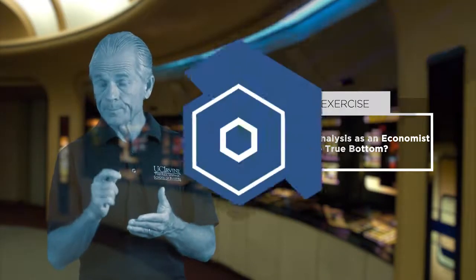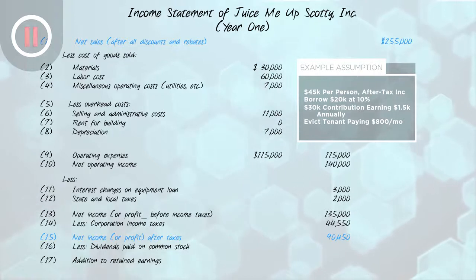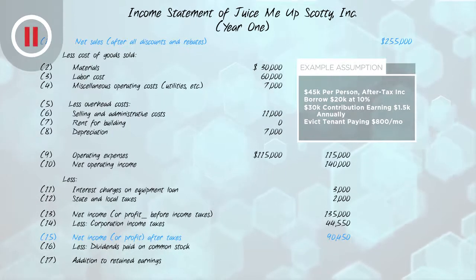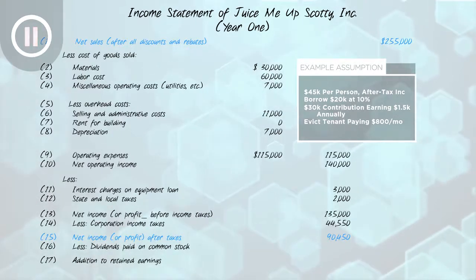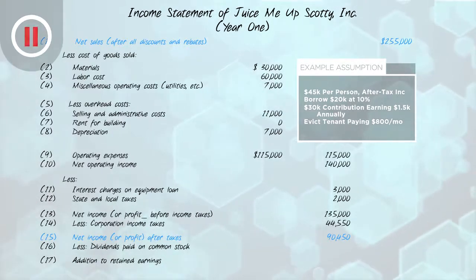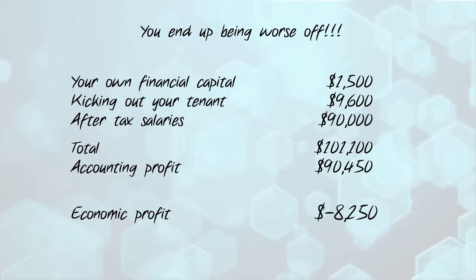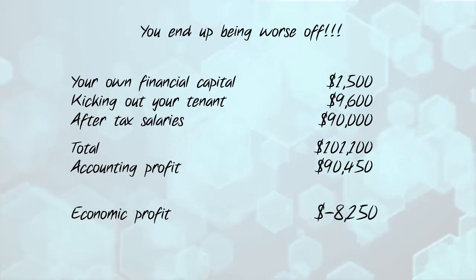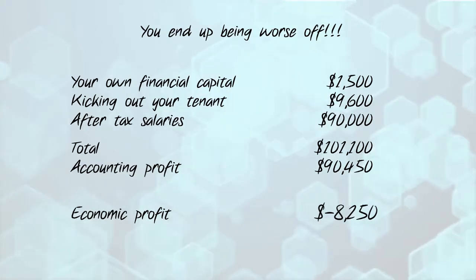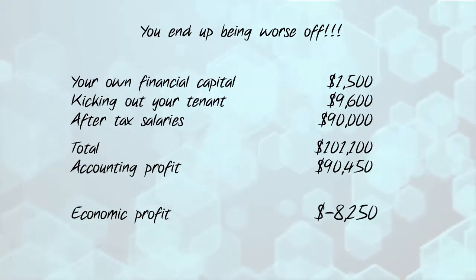The fixed costs total another eighteen thousand dollars and include things like selling and administrative costs, as well as rent — which in your case is zero because you own the building. Also note this curious item as part of the fixed costs: a category called depreciation.